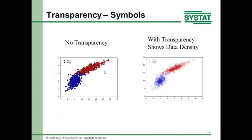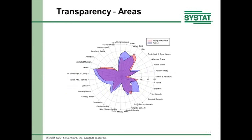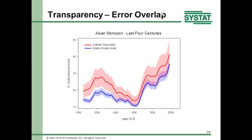Transparency: on the left are two data sets with no transparency, and on the right transparency is used to show data density — you can see a circular high-density region for one data set and an elliptical shape for the other. Another example: overlapping areas where you want to see the outlines of both — you can see the blue and through it the red, making it easy to compare them. For error bar transparency, error bars that were so close together they looked ugly were replaced with transparent area fills, allowing you to clearly see where the two overlap.